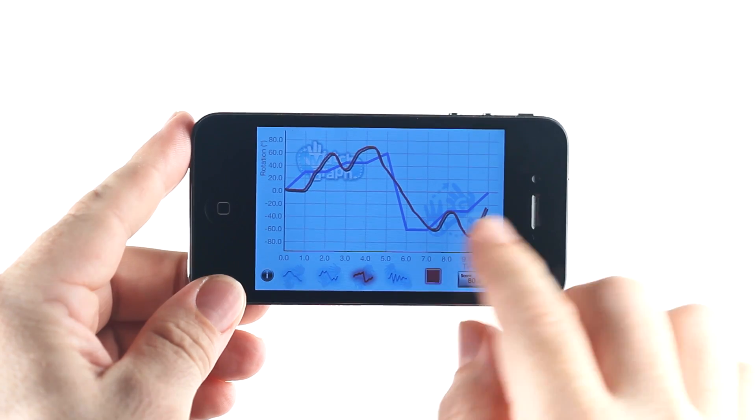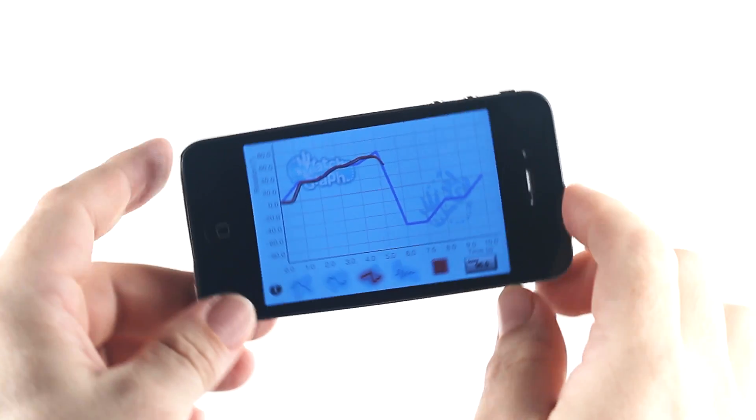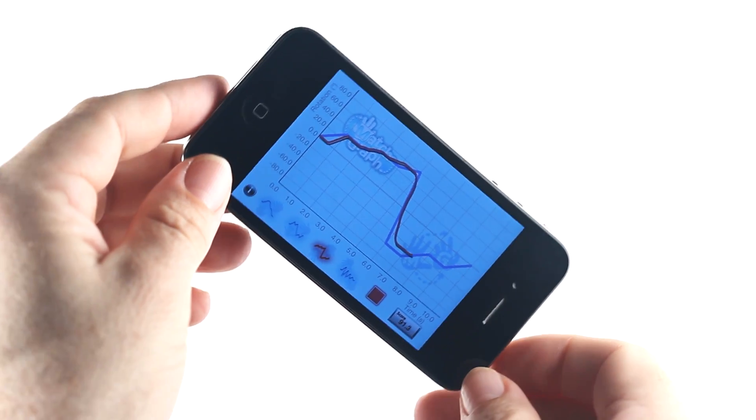If you're using Match Graph with students, challenge them to discover how their movements in the real world are mapped onto the graph on the screen. Can they predict ahead of time how they'll need to rotate the phone to match the targets?